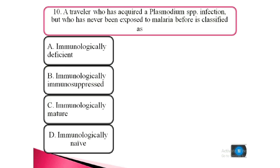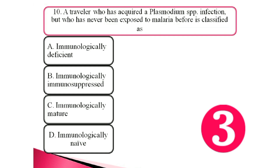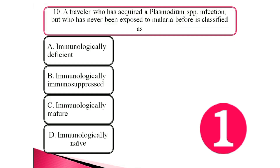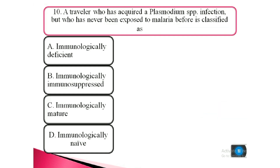Question 10. A traveler who has acquired a Plasmodium species infection but who has never been exposed to malaria before is classified as: a. immunologically deficient, b. immunologically immunosuppressed, c. immunologically mature, d. immunologically naive. The answer is d. immunologically naive.